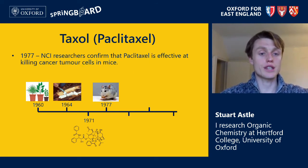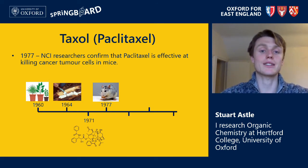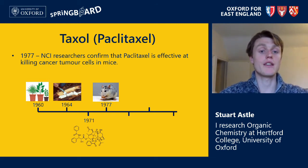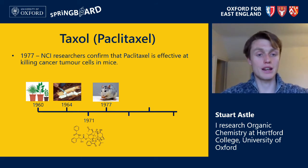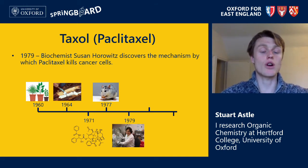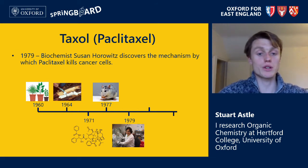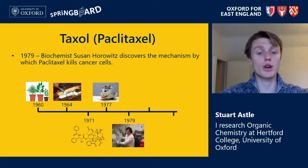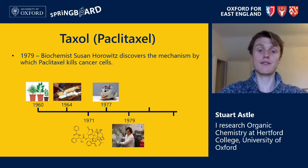A few years after the discovery of its chemical structure, NCI researchers confirmed that paclitaxel is indeed effective at killing cancer cell tumors in mice — an important step in developing this compound as a chemotherapy drug. A couple of years after that, biochemist Susan Horowitz was able to discover the mechanism by which paclitaxel kills cancer cells. This was a really important discovery because if we didn't know how this drug operates in killing cancer cells, it couldn't be considered safe to give to humans, for fear it might cause unwanted side effects.